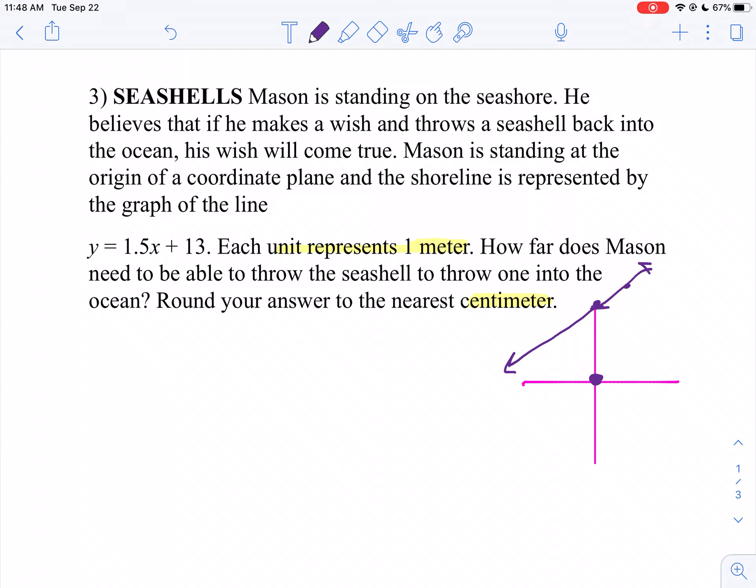What you need to do is find the distance from Mason to the seashore. Well, in order to do that, we need to find the perpendicular distance. So we need to draw in the perpendicular line. I need to find the equation of that perpendicular line, and then I need to find this point so I can find the distance.